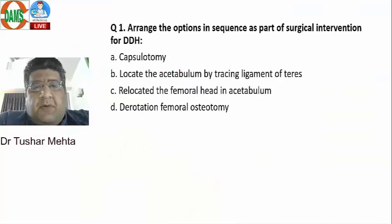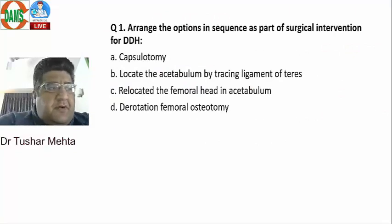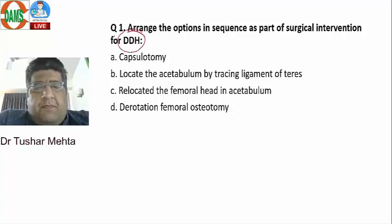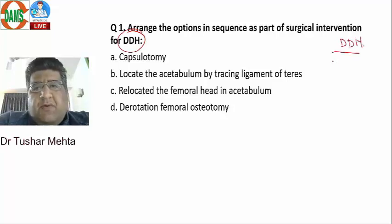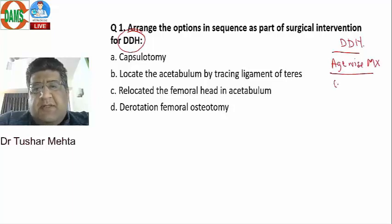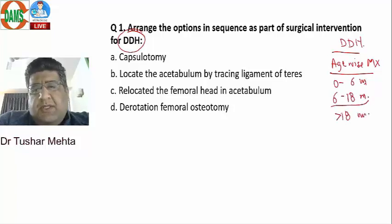The first question asks to arrange the options in sequence for surgical intervention in DDH. When we talk about management of DDH, it is always age-wise: 0 to 6 months, 6 to 18 months, and more than 18 months.